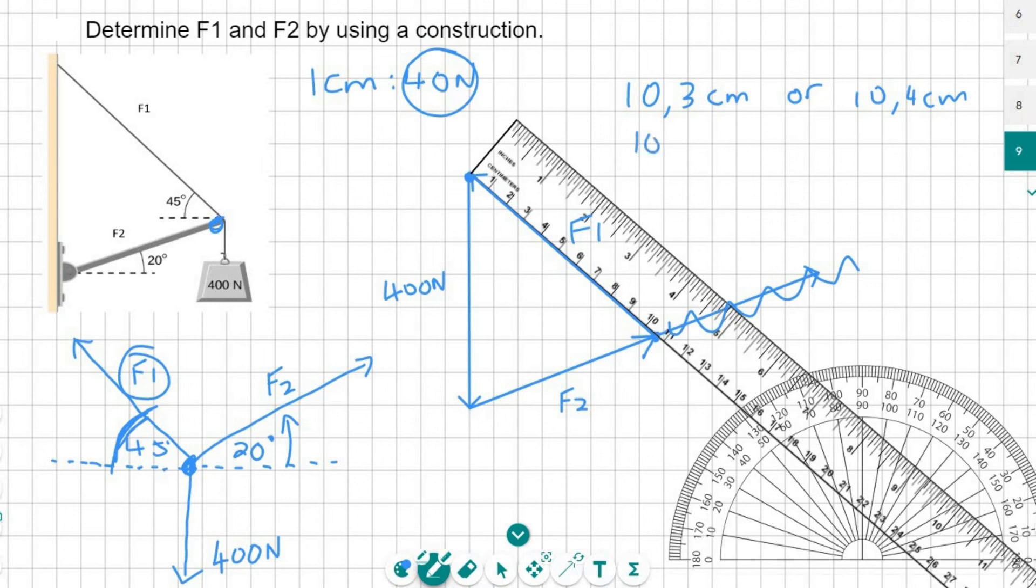So you should look for about 10.3 centimeters, or somewhere around 10.4 centimeters. I must have gone off a little bit. And remember that that's not the final answer, because you'd have to multiply by 40. So if it was 10.3, and you multiply that by 40, then that's going to be about 412 newtons. And if you've got 10.4, then it's about 416. So try to get as close to that as you can. Of course, you are going to make a few mistakes. The protractor and ruler method, you can get a little bit off, but the teachers do understand that, and you don't have to get it absolutely perfect. And that was for F1.